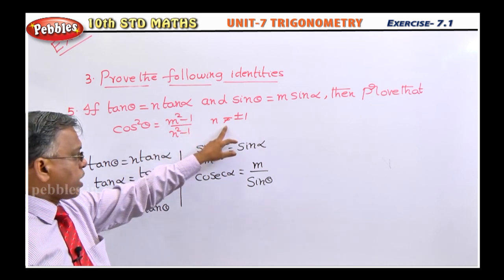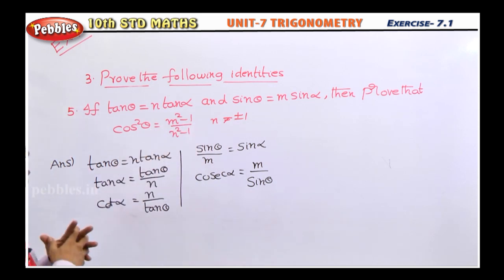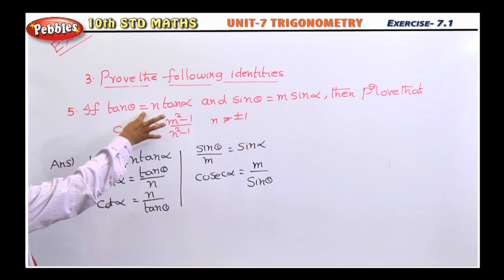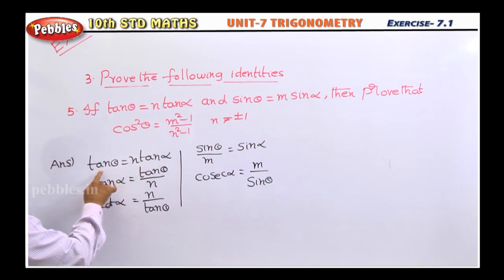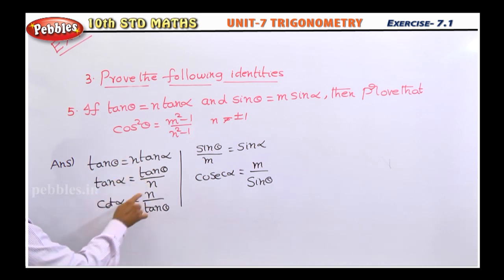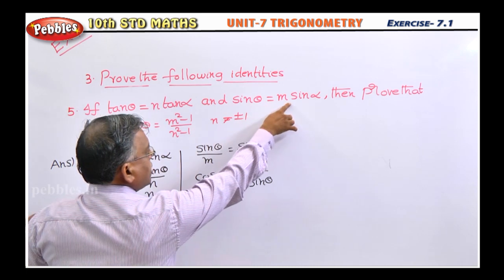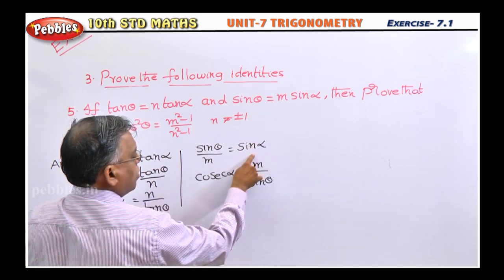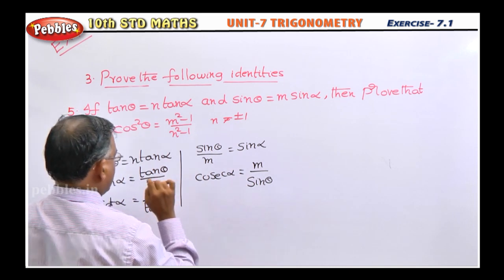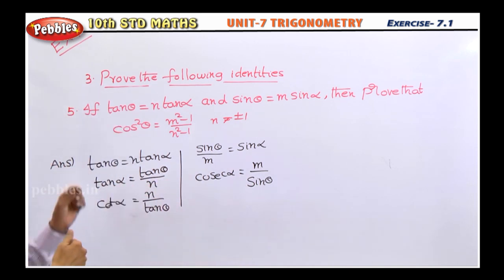From the first condition, tan θ = n tan α, so tan α = tan θ / n, which means cot α = n / tan θ. Similarly, from the second equation, sin θ / m = sin α, so cosecant α = m / sin θ. We are converting like this because there is an identity involving cosecant α and cot α.